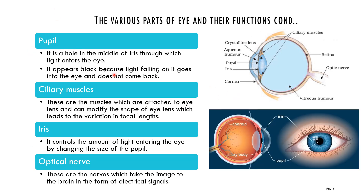Next is the pupil. It is a hole in the middle of the iris through which light enters the eye. The pupil appears black because whatever light falls on the pupil gets absorbed — it does not get reflected. Therefore it appears black. In the exam, they may ask: give the reason why the pupil appears black. The answer is: whatever light falls on the pupil gets absorbed and is not reflected.